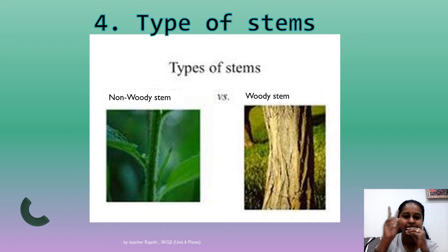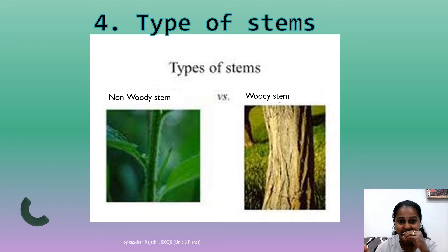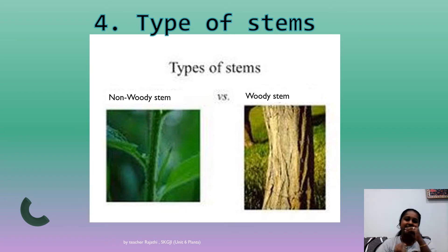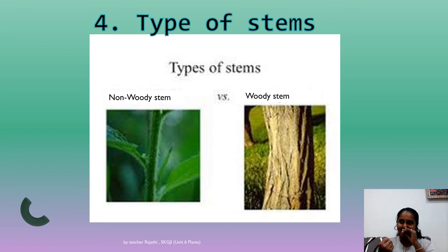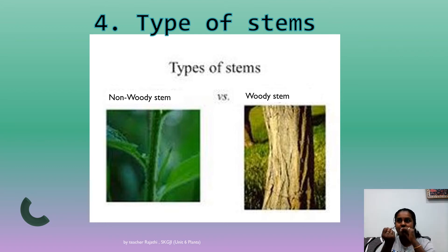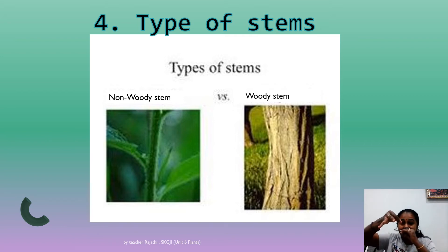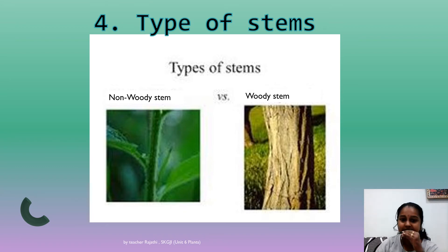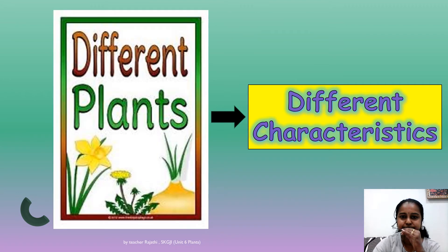The next characteristic is the type of stem: non-woody stem and woody stem. A non-woody stem you can easily break — for example, grass. You can just take it and break it easily. A woody stem, like the mango tree, you cannot break — if you tap it, it makes a hard sound. The woody stem is brown in color.